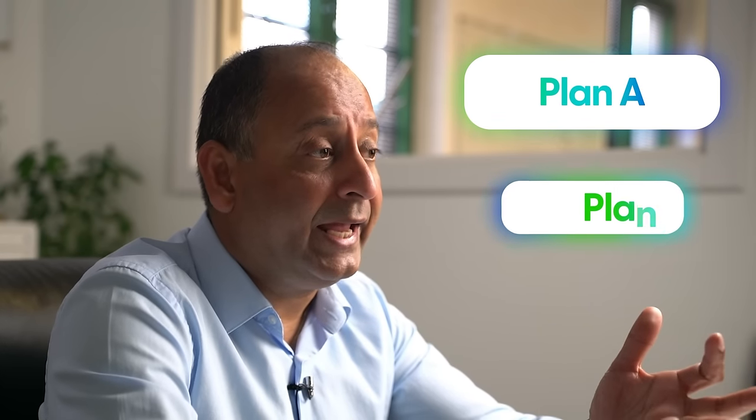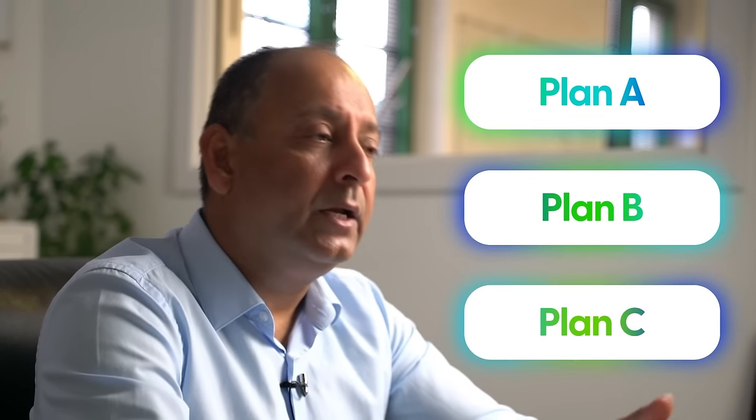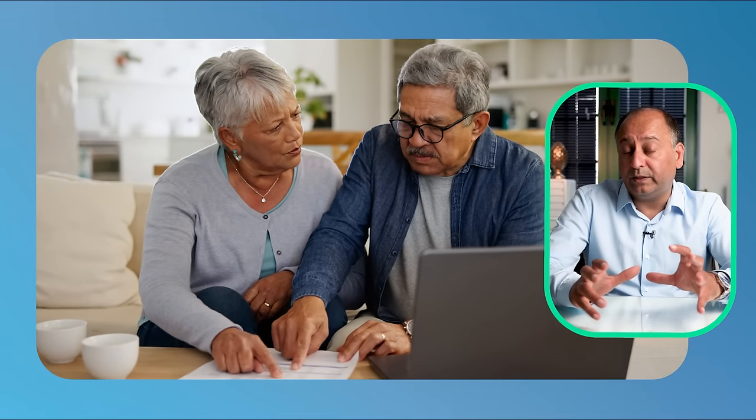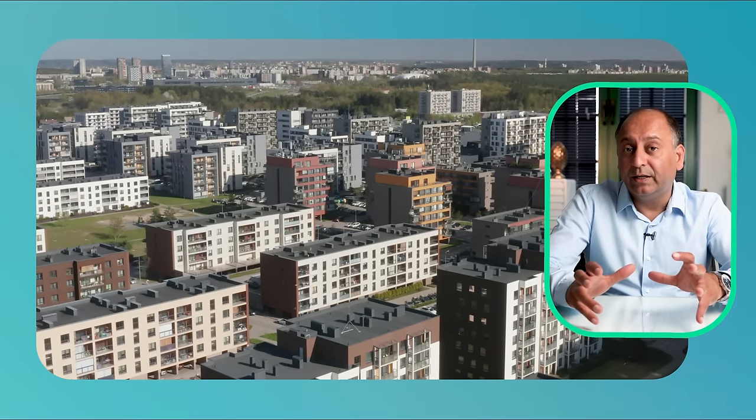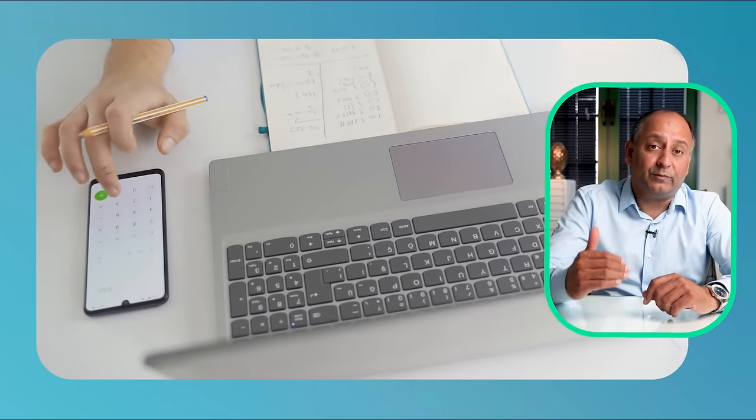When you're going into commercial to residential projects, it's really important that you have a plan A, plan B and plan C. Plan A is not your most optimistic — what happens if you don't get the most optimistic result? Plan A is what happens if nothing happened. If you couldn't convert that commercial property and you were left with the commercial property, that is your plan A. Can you still financially survive? Can you still make the project viable if you didn't get the planning?